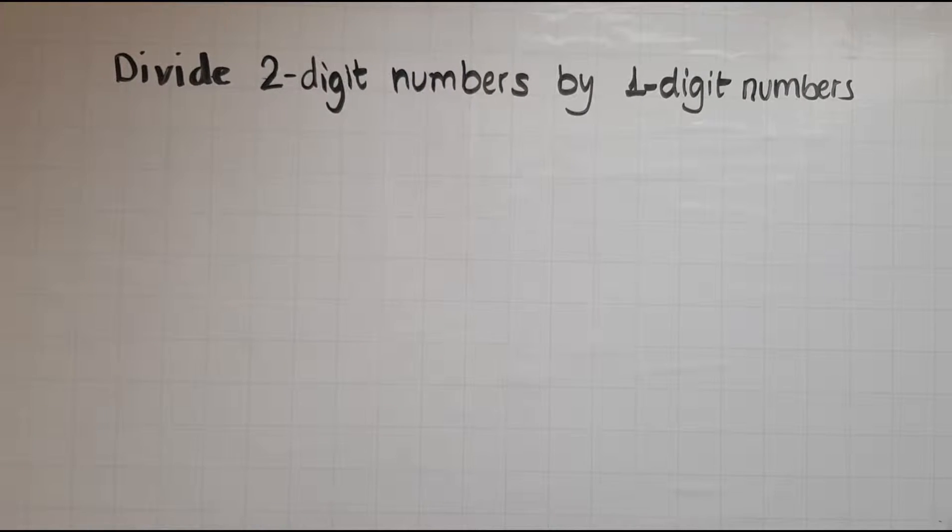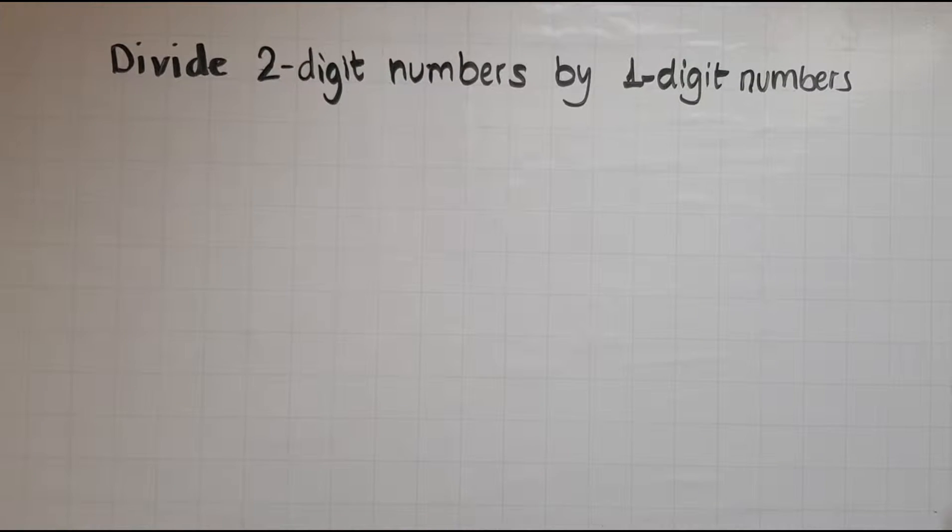In this video we'll learn to divide two-digit numbers by one-digit numbers. Two-digit numbers are numbers that have two digits like 12, 23, 35, 68, whereas one-digit numbers are numbers from 0, 1, 2, 3, 4, 5, 6, 7, 8, 9.